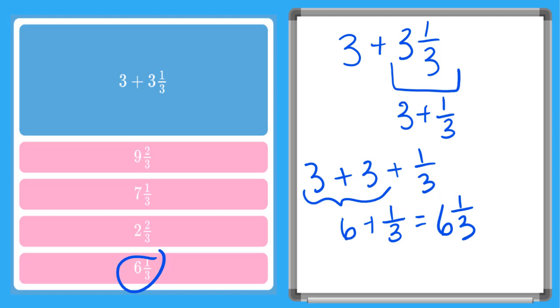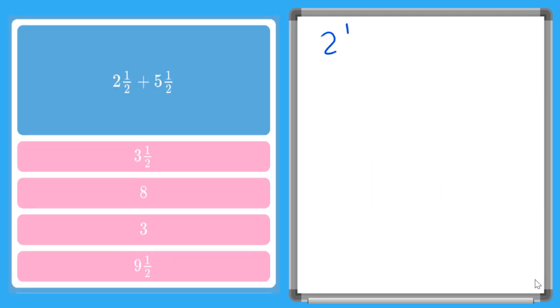All right, let's try a trickier one. So in this one, we have 2 and a half plus 5 and a half. But let's expand our mixed numbers out. We know that's just saying a whole number plus a fraction plus a whole number plus a fraction.